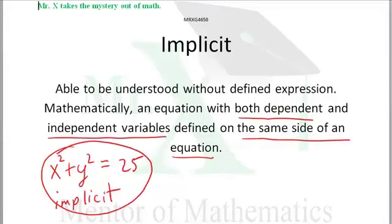Now, we could make this explicit by saying, okay, x is equal to the square root of 25 minus y squared. We could clean that up.